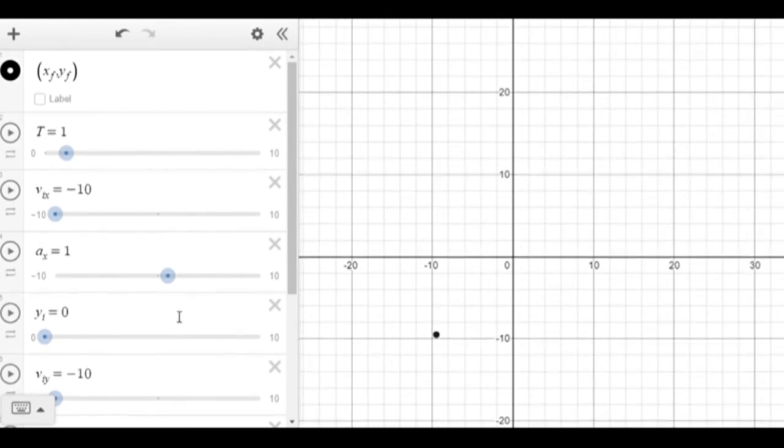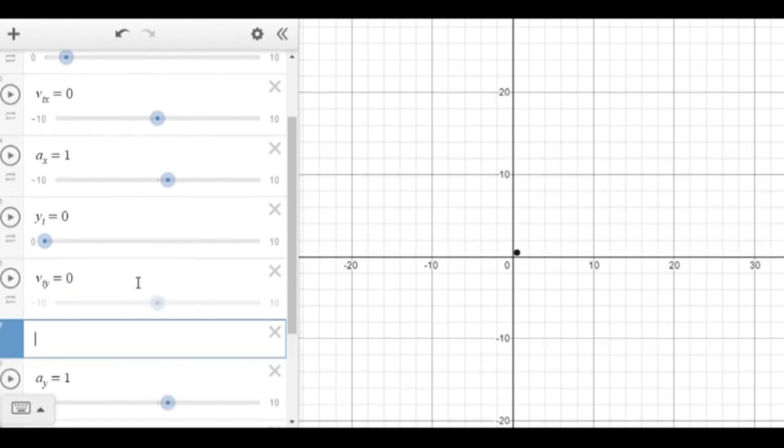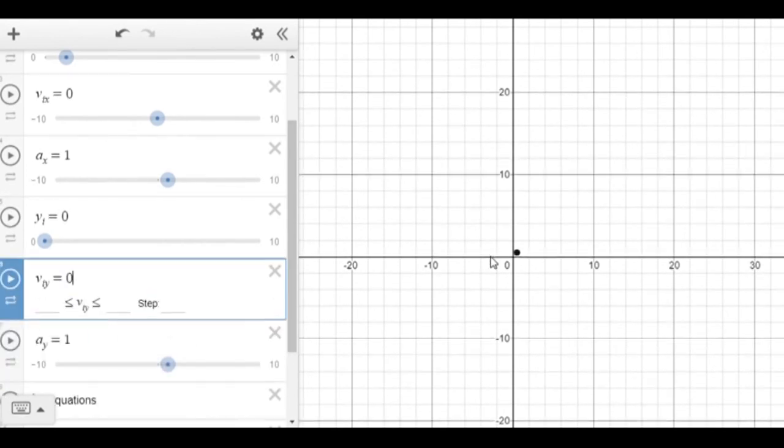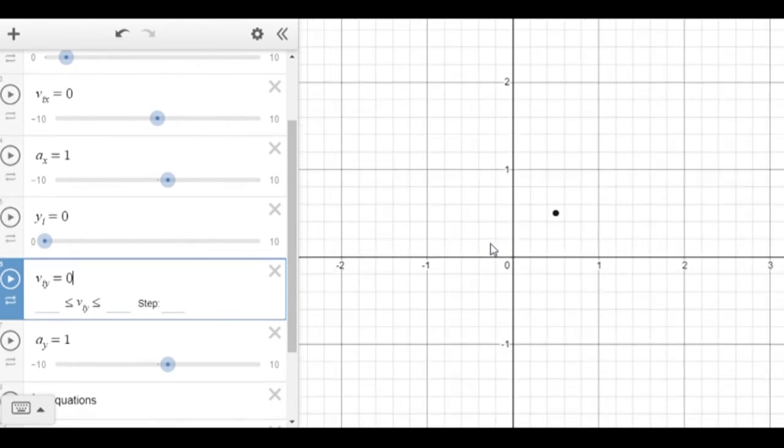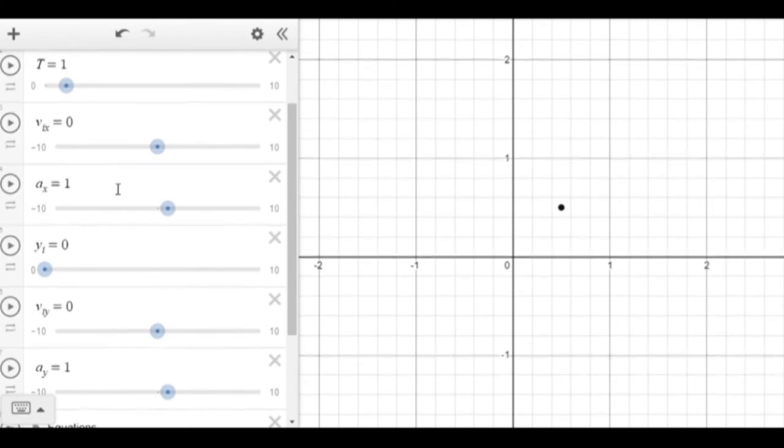This got set to negative 10. Let me set that to, let me set the initial velocities to 0. 0 and 0. Okay, so now we have a point. You'll notice that we can change time and we'll watch the particle move according to specifications that we've given.